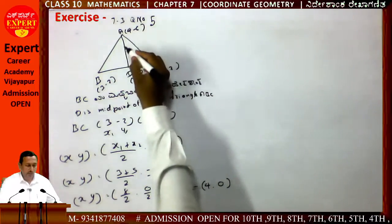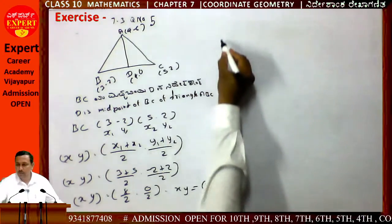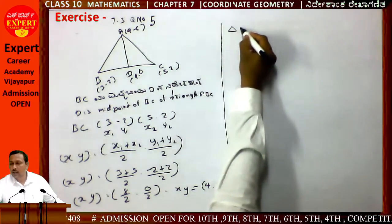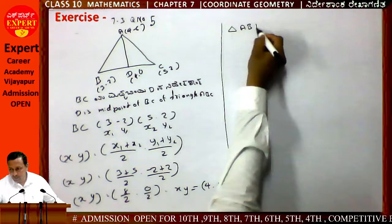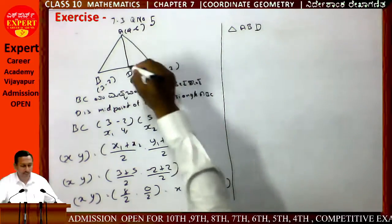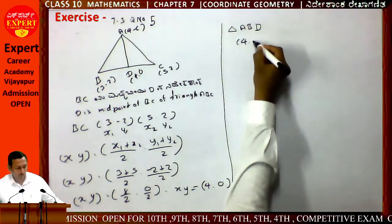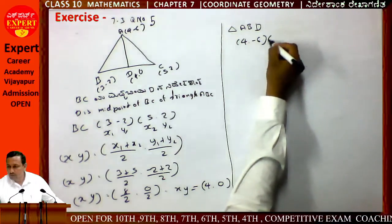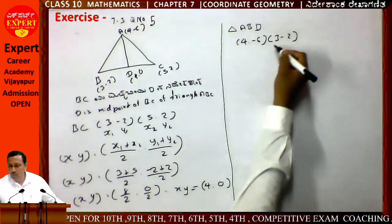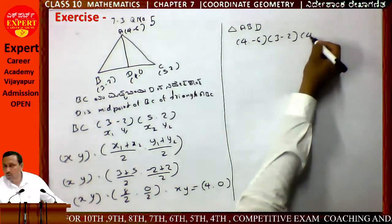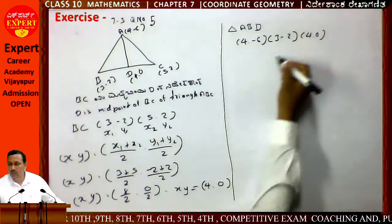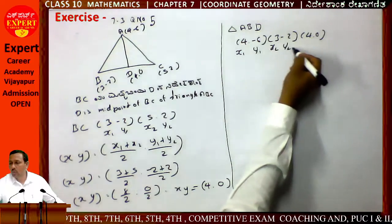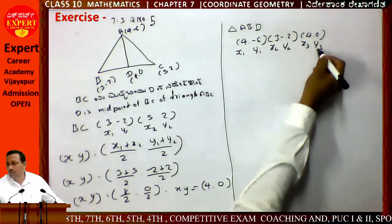Continue — find area of triangle ABD. Triangle ABD has vertices: A(4,-6), B(3,-2), D(4,0). Assign x1, y1 = A; x2, y2 = B; x3, y3 = D.